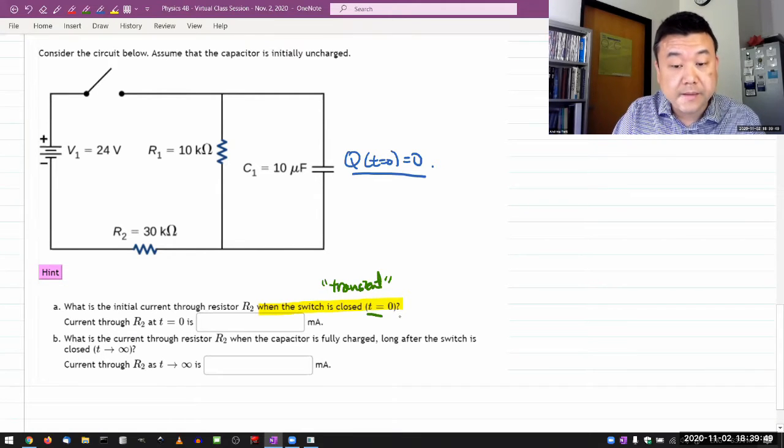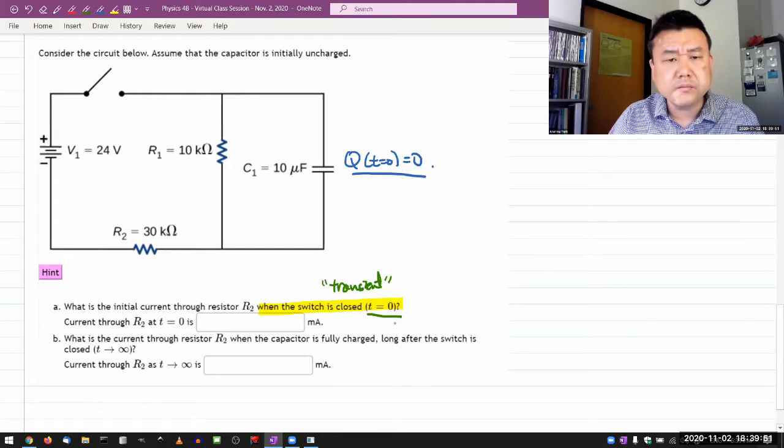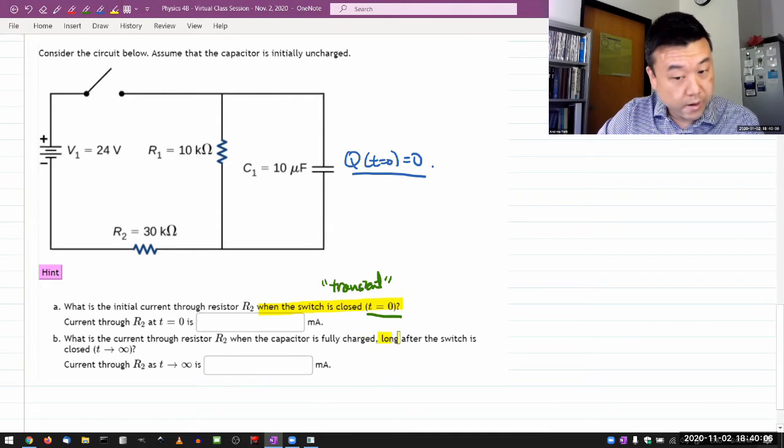So, it's the one end of the time dependence that we can quickly analyze without doing too much calculus with the capacitor, which is what we need to treat the time dependence fully. And the other question is where, you know, long after the switch is closed. So, this is the asymptotic behavior...